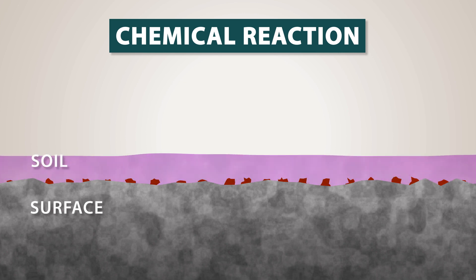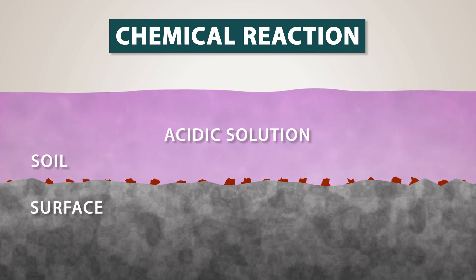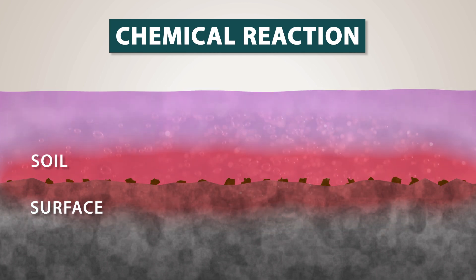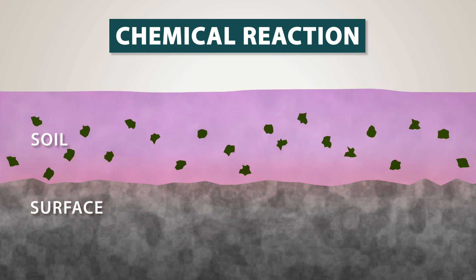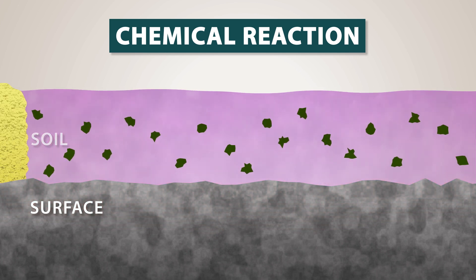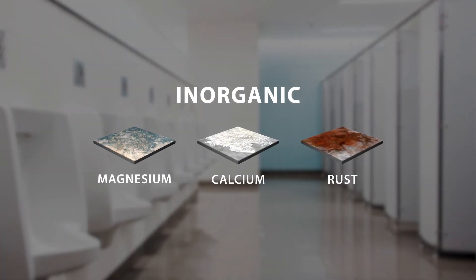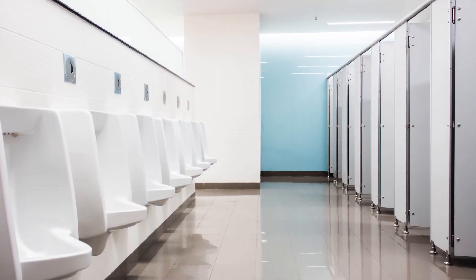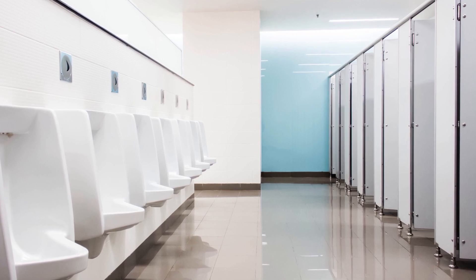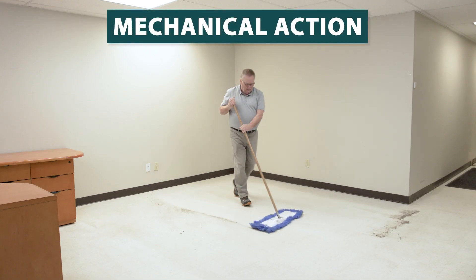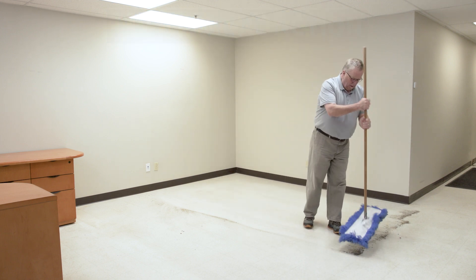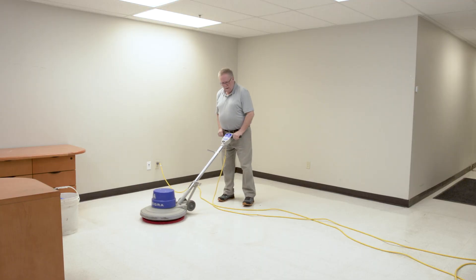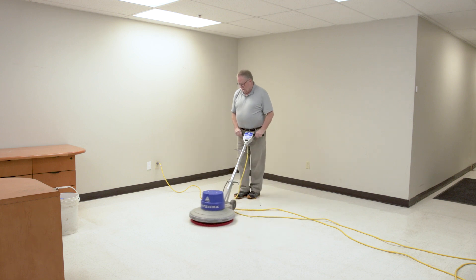Cleaning by chemical reaction involves applying a chemical-based solution to soil that is not affected by solvent or detergent. The chemical is usually acidic and chemically changes the composition of the soil, which causes it to detach from the surface. This is effective for removing non-organic, insoluble soils such as magnesium, calcium, and iron from non-resilient surfaces such as toilets, urinals, and showers. Cleaning by mechanical action can include simple tasks like sweeping debris with a broom, using an abrasive pad to scrub a surface, or even sandblasting. This type of cleaning is most effective when used in combination with a chemical program.